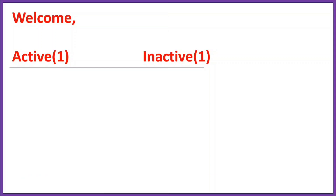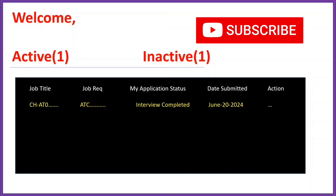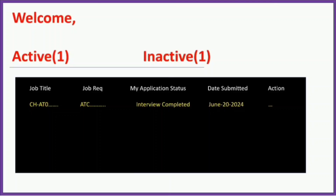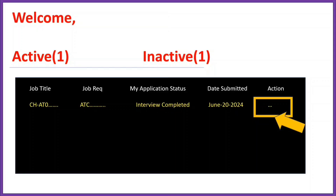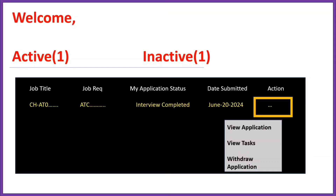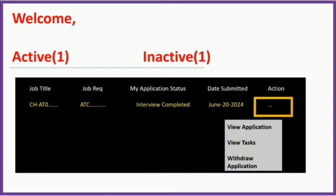Once you scroll down after completing the tasks, you will see your profile listed as active or inactive. Your profile should be active since Accenture mailed you. Here you can see details like your job title, job requirement, and application status — reflecting the interview you completed recently — along with the date submitted. Under the action section, clicking the three dots gives you options: view application, view tasks, and withdraw application. Please be very careful — accidentally clicking 'Withdraw Application' would be harmful to you.